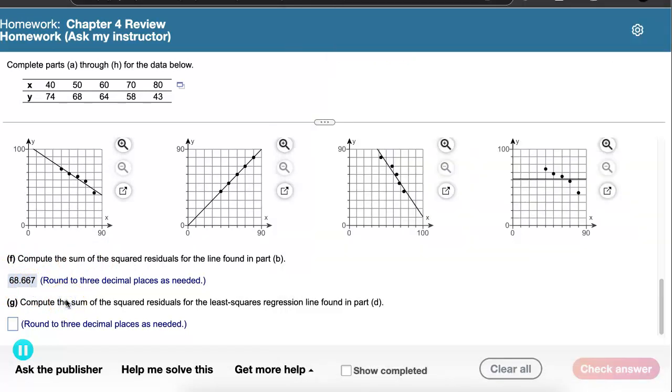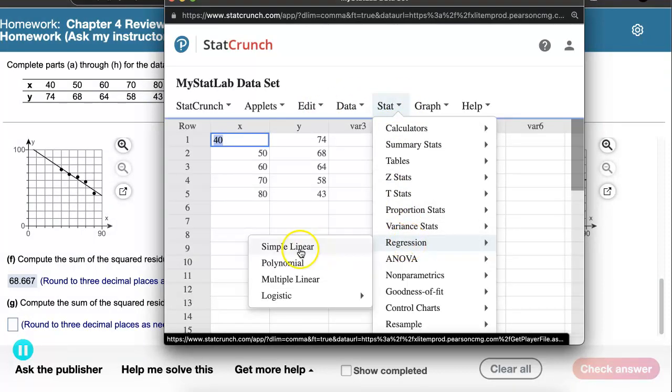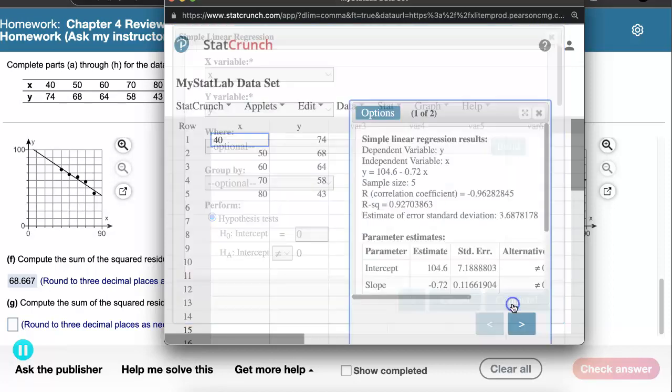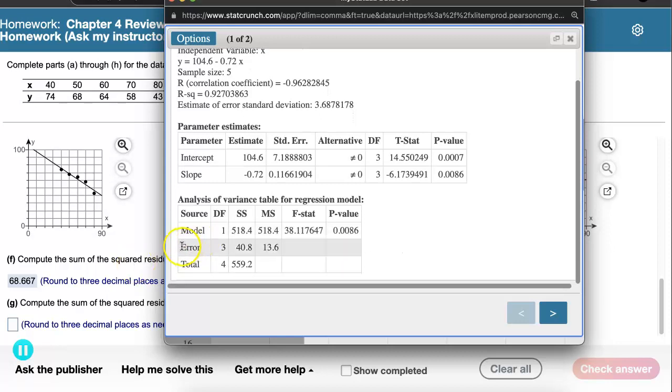Now in part G, I'm asked to compute the sum of the squared residuals for the least squared regression line. And that is something that you get as part of the output inside of StatCrunch when you find the simple linear regression. So I'm just going to start from scratch, open my data in StatCrunch. I'll go to Stat, Regression, Simple Linear. And at first, this looks a lot like you're finding the least squared regression line. It may look like you're finding the coefficient of determination or you're getting a graph. But one of the many things that's included here is the sum of the squared residuals. Inside this output, those residuals are referred to as error. And the sum of the squares is right here, SS. So together, if we look inside that column and row, we get that the sum of the squared residuals or error is 40.8.